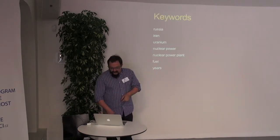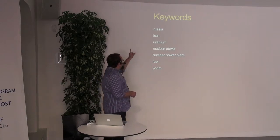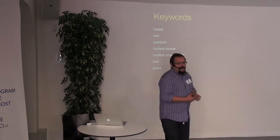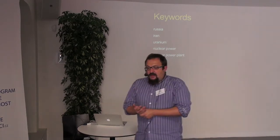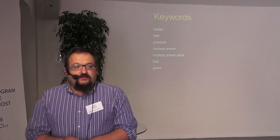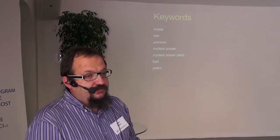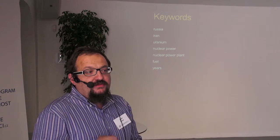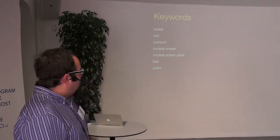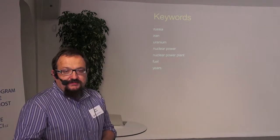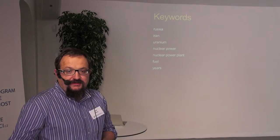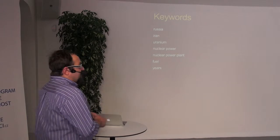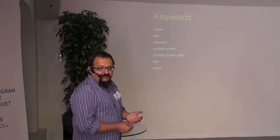It then identified the main keywords like Russia, Iran, uranium, nuclear power, nuclear power plant, fuel, and years. What was great was that if you don't find any keywords which you have in a database, it tries to push other keywords from the same hierarchy in Wikipedia. That's how we were able to serve ads for non-existing keywords on the page.